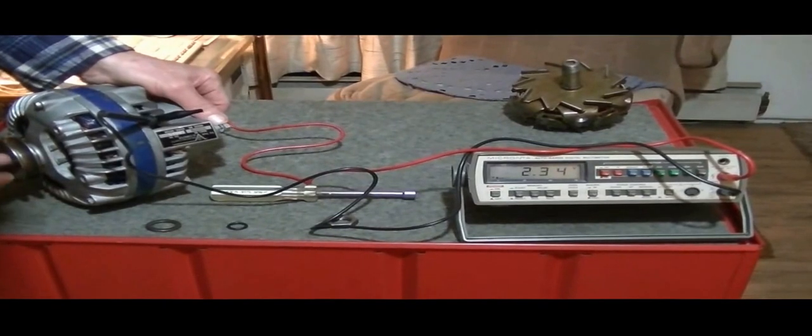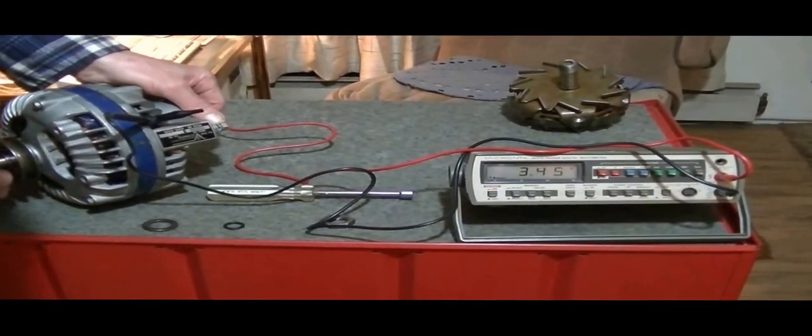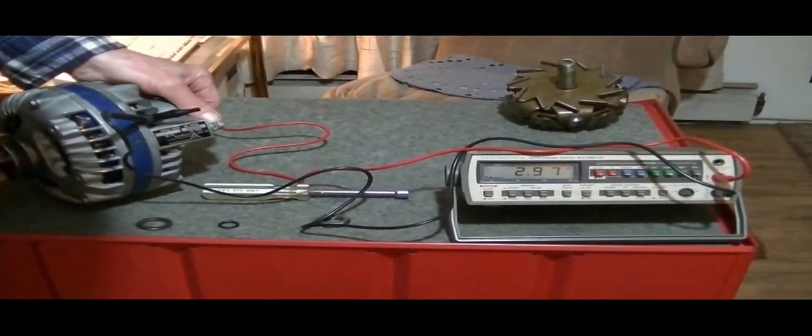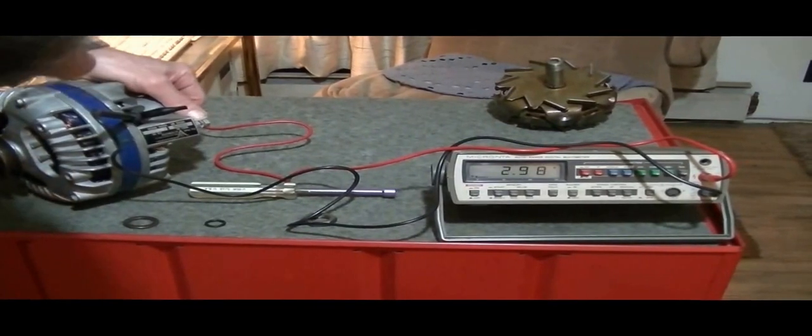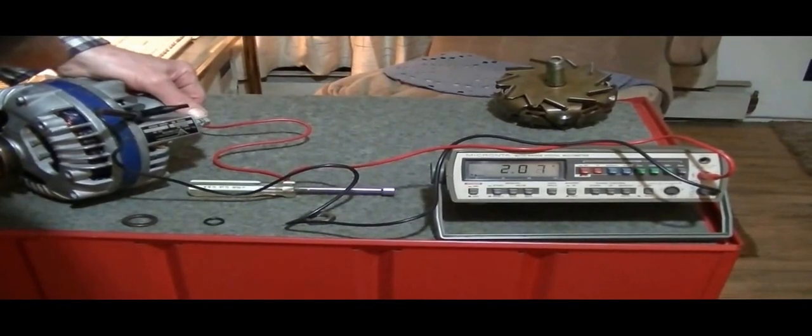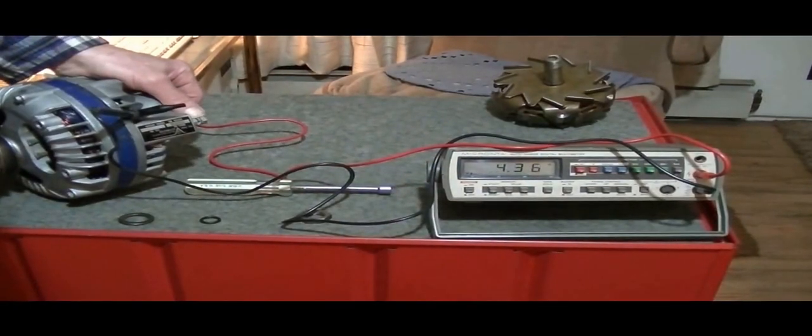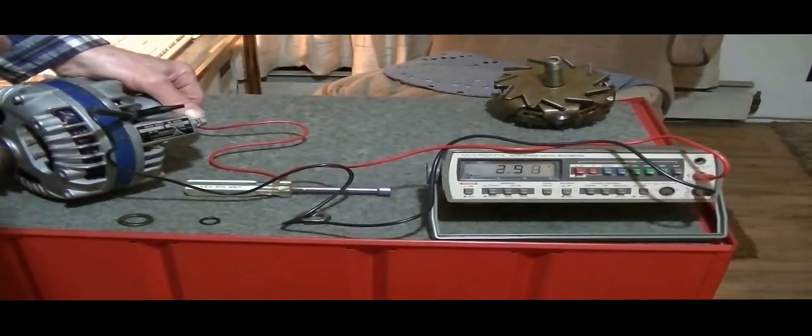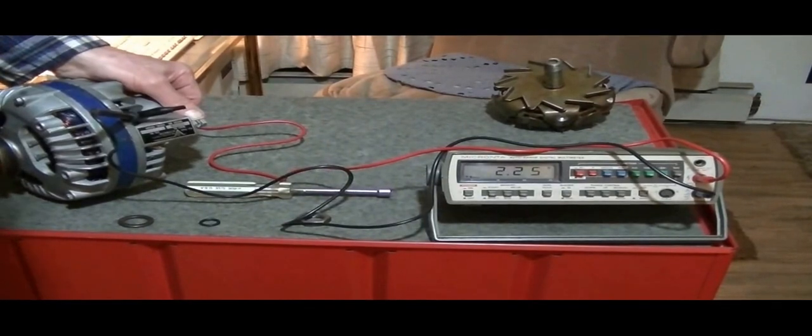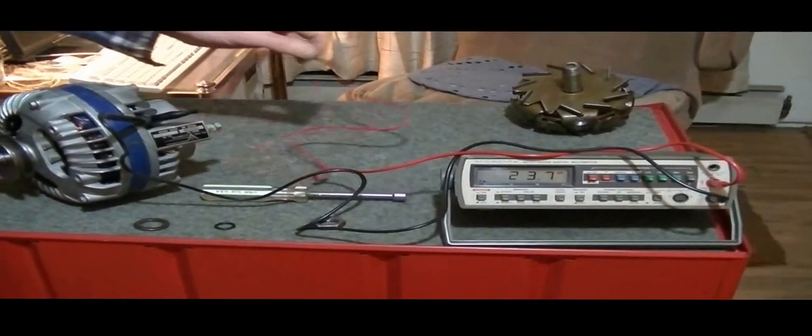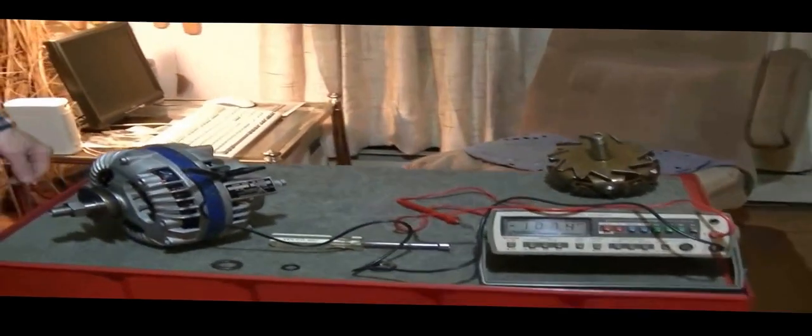Now we're getting voltage. Looks like 2 to 4 volts, just spinning it by hand. You can see on our display, getting 4 volts there at 3, 2. That's just spinning it by hand relatively slowly. So it's working at a very low speed.